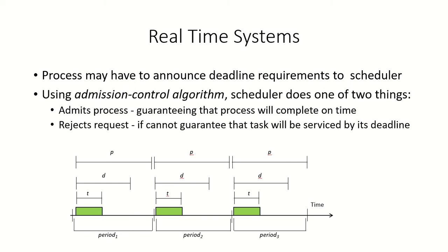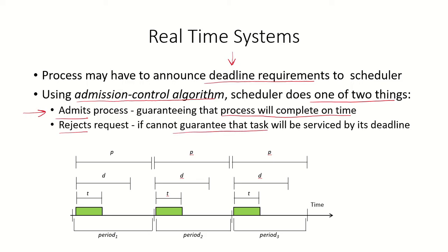Once a process enters the system, it must announce its deadline requirements to the scheduler. The scheduler has an algorithm referred to as the admission control algorithm. Based upon the deadline requirement, the scheduler will do one of two things: either admit the process or reject it. It will admit the process only when the system can guarantee that the process will be completed on time — before its deadline. If the scheduler feels it cannot guarantee the task will be serviced before its deadline, it will reject the request. How these real-time processes will be scheduled will be covered in further lectures.